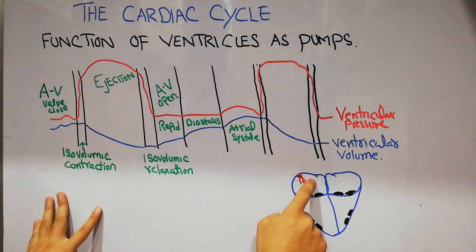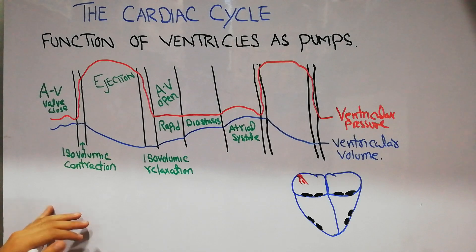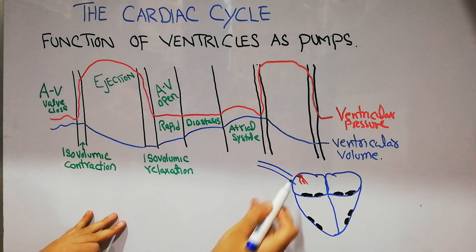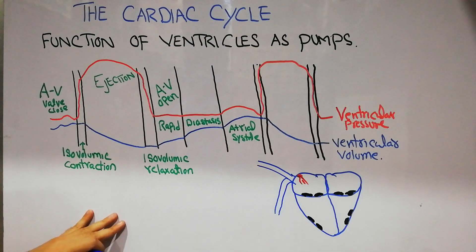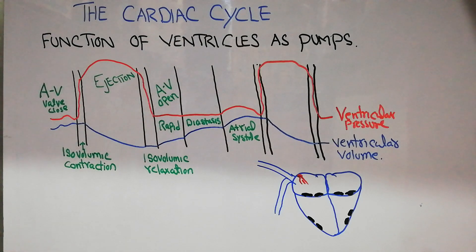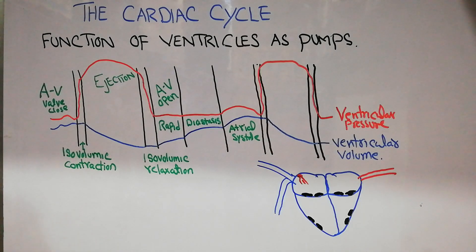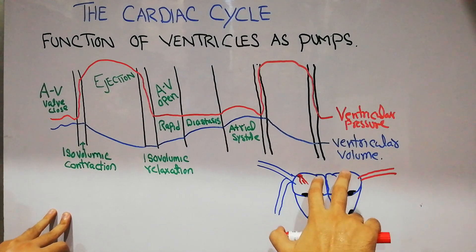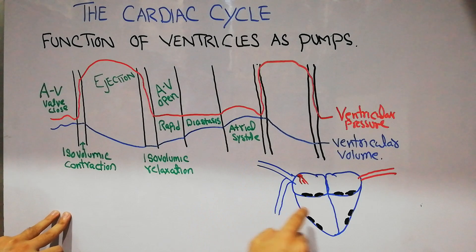When the atria get filled with blood, deoxygenated blood from the upper and lower extremities is returning to the right atrium, and the oxygenated blood from the lungs is being pumped into the left atrium. As soon as the atria get filled with blood, the pressure of the blood causes the atrioventricular valves to open.